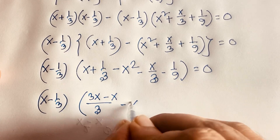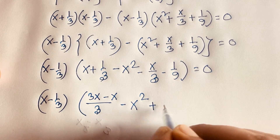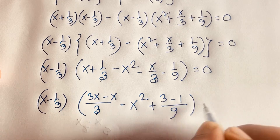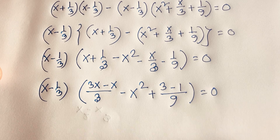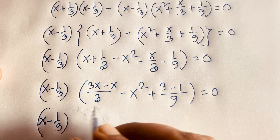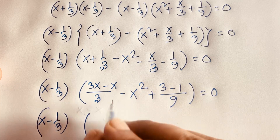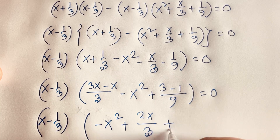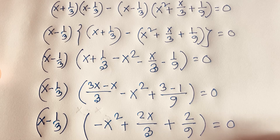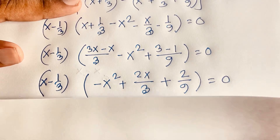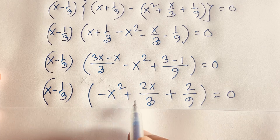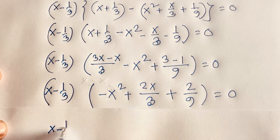We find two cases. First case: x minus 1/3 equals 0. Second case: minus x squared plus 2x over 3 plus 2 over 9 equals 0. From the first case, x equals 1/3, which is our first final answer.